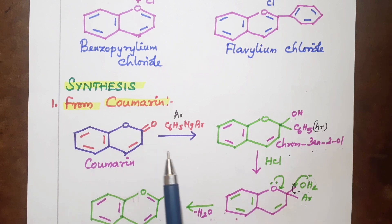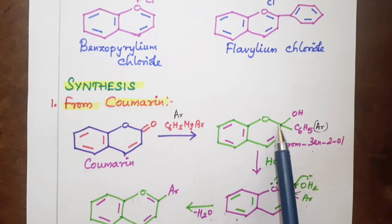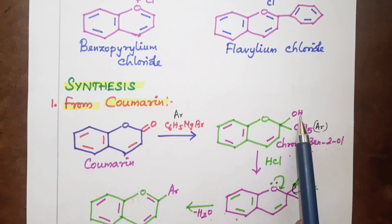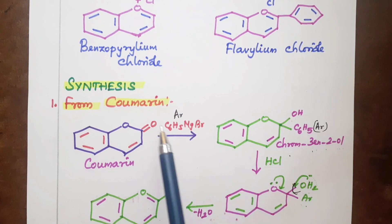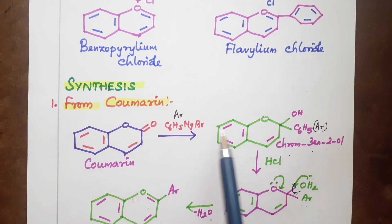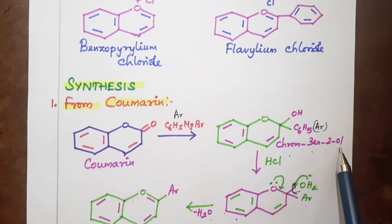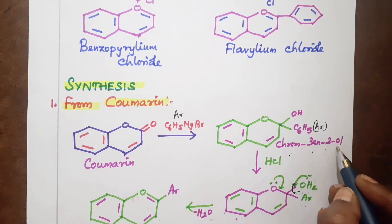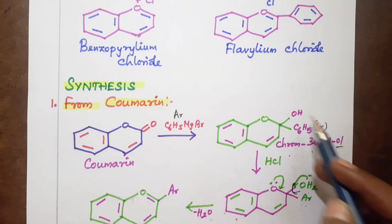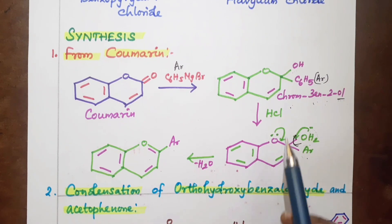The synthesis of anthocyanin starts from coumarin. It involves a ketone with a double bond, O-RMgX, and an aryl group — specifically a phenyl group. The OH is a single bond OH, and the C6H5 group forms a compound.